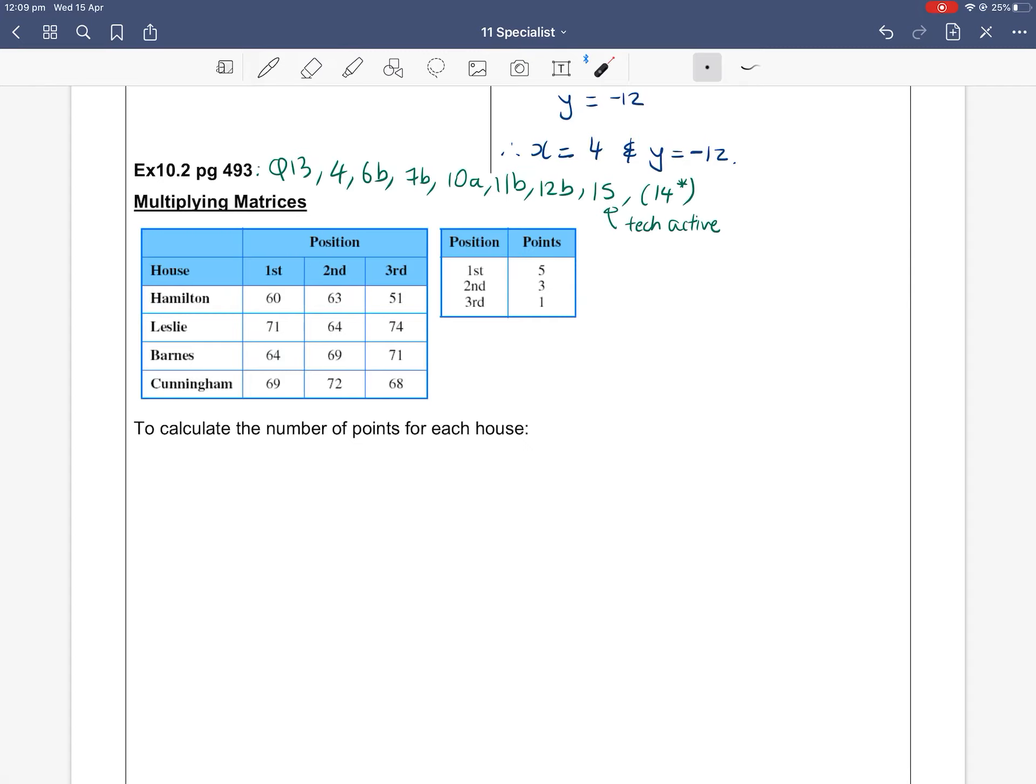They recently had a sports competition. Hamilton had 60 students come first, 63 students come second, and 51 students come third. For example, Barnes had 64 students coming first and 71 students coming third, etc. We have a second table saying that every first position gained five points, every person that came second gained three points, and every third person gained one point in the competition.